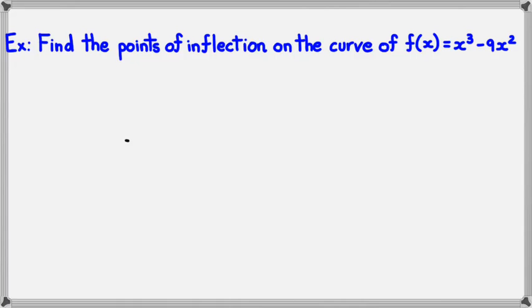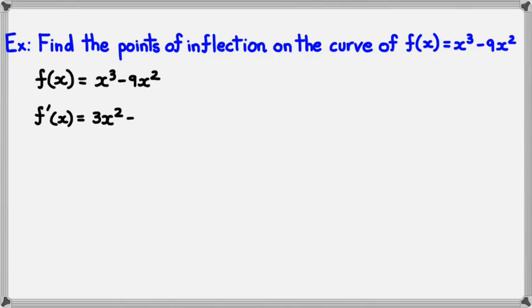So the first thing we're going to do is differentiate the function. We get f'(x) = 3x² − 18x. We're going to double differentiate it, so f''(x) = 6x − 18.